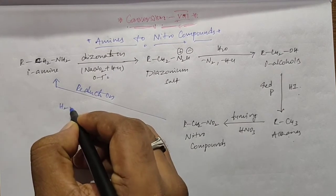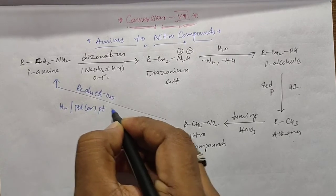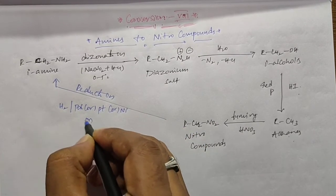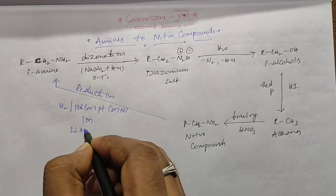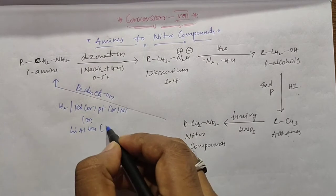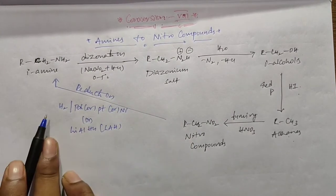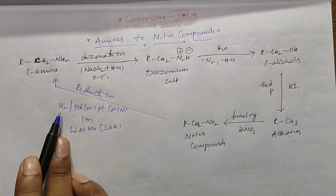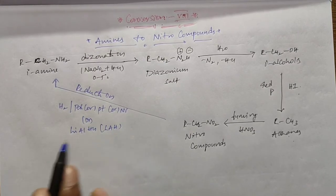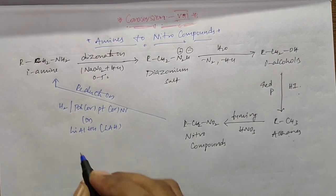For reduction, there are various processes. One method is hydrogenation in the presence of palladium, platinum, or nickel catalyst. Another method is reduction with lithium aluminum hydride, LiAlH4.